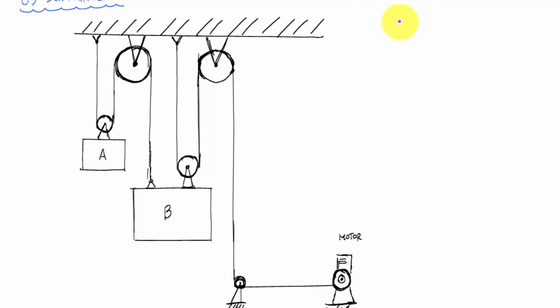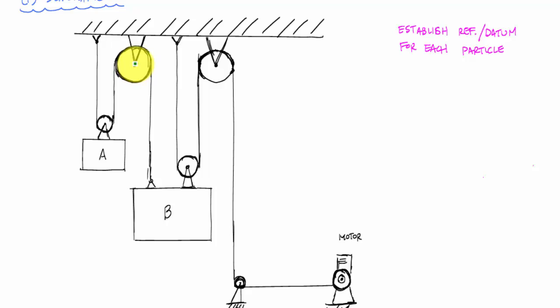The first thing I need to do on my schematic is establish references and datums for each particle. I want to do this so I can come up with an equation for the length of the entire cable. For the origin or reference for each particle, I want to choose a fixed location on the pulley system — for instance, a point on this wall that never moves.